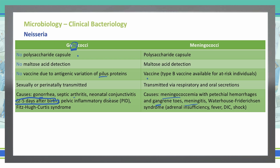Meningococci also causes Waterhouse-Friderichsen syndrome, which has four significant findings: adrenal insufficiency, fever, DIC, and shock.